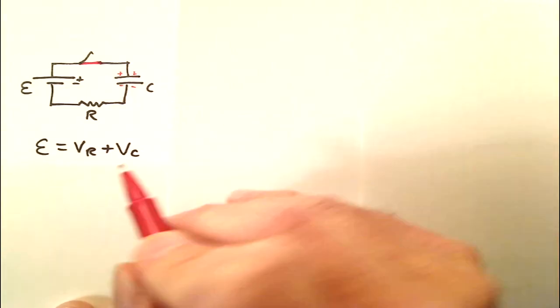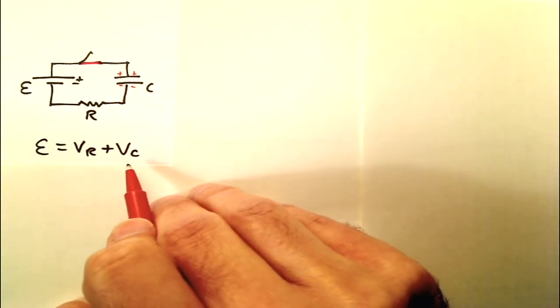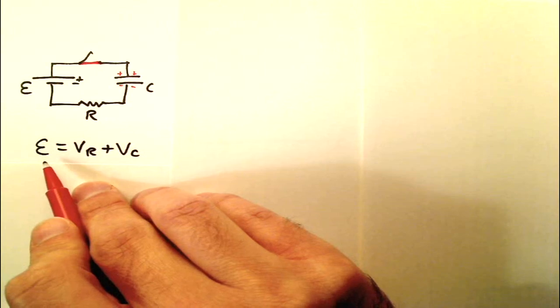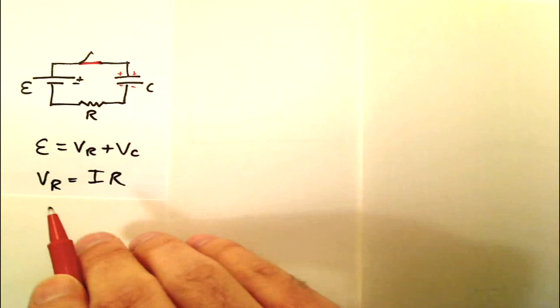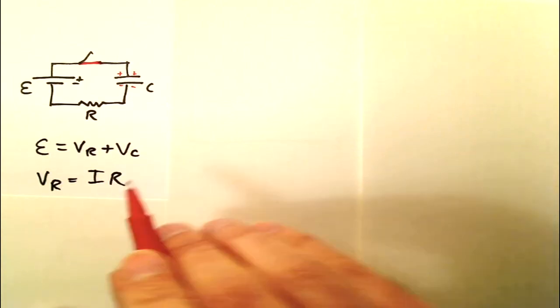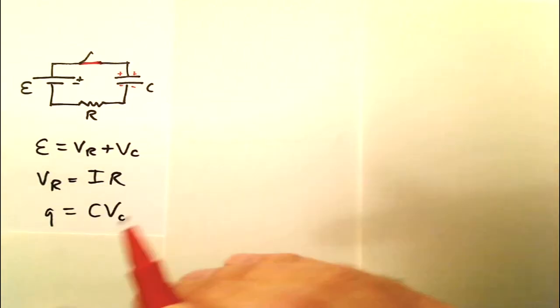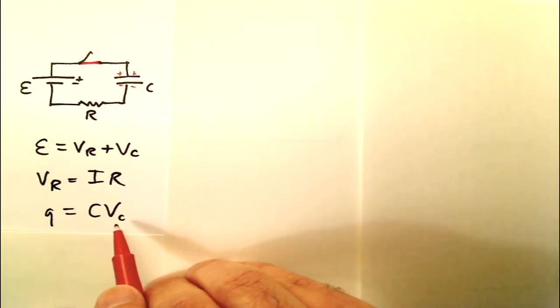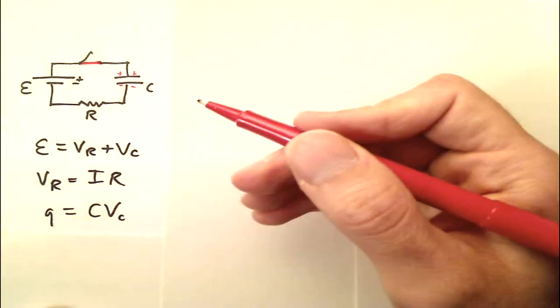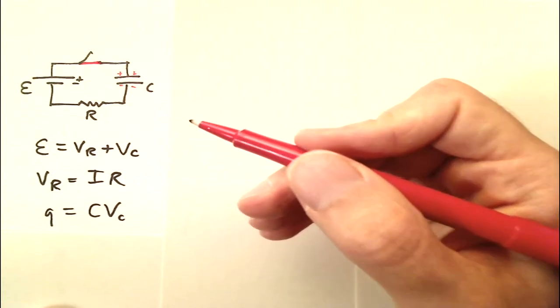Those are namely the voltage on the resistor plus the voltage on the capacitor is equal to the EMF. It's just what happens when they're in series. The voltage on the resistor is equal to the current times the resistance. The charge on the capacitor is equal to the capacitance times the voltage on the capacitor. Now you should already know all of these if you're studying RC circuits.